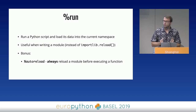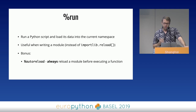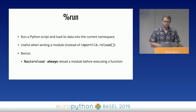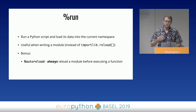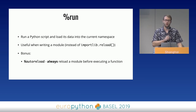The run magic will run a Python script and load all its data into the current namespace. I find it very useful when writing a module or a bunch of functions in a file that I want to test. If there's a bug, I can't just reimport it — I'd have to import the reload function from importlib and use that, which I usually forget the name of. So instead of importing my modules, I rerun them. Each time I do, IPython updates the current namespace with the latest code. Also, there's a configuration option called auto reload that will always reload a whole module before running a function from it.